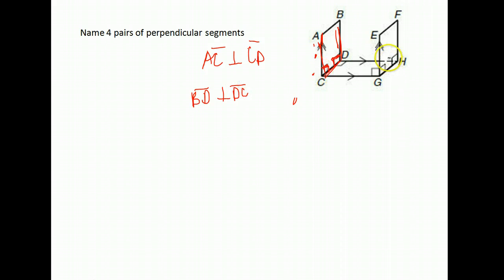Let's look for more symbols right here in this corner. EG and GC come together there. So EG is perpendicular to GC. It's marked that way on the figure.